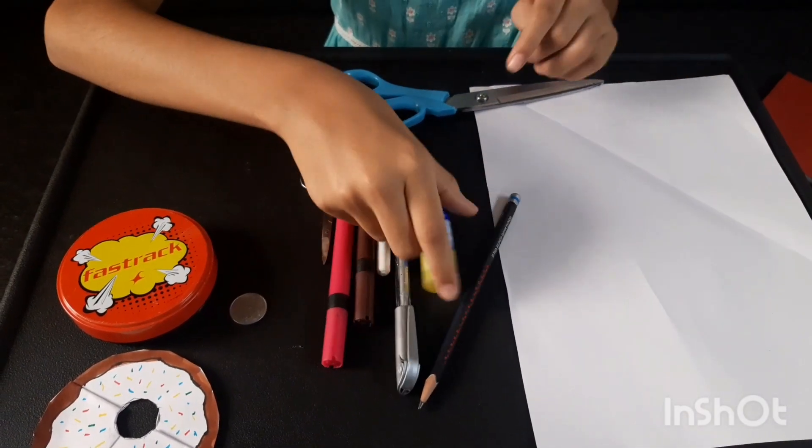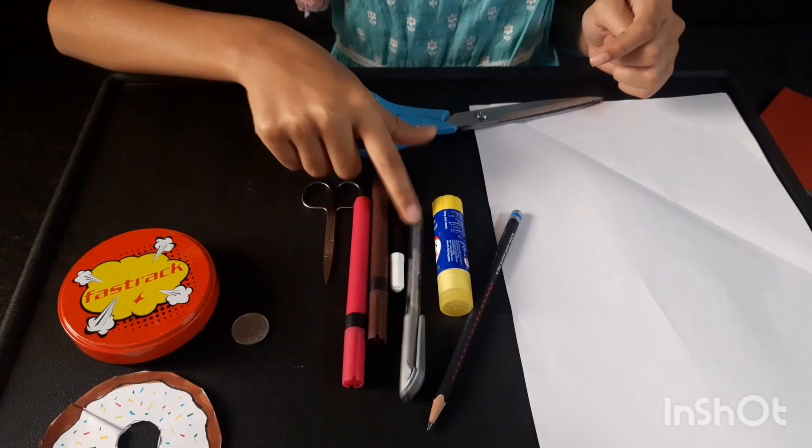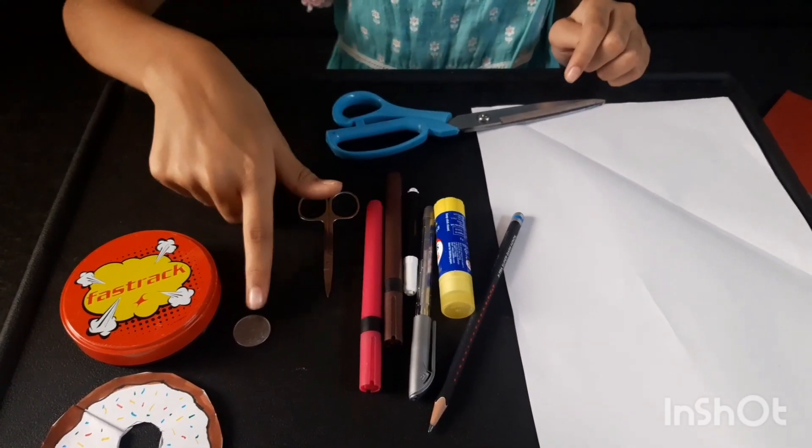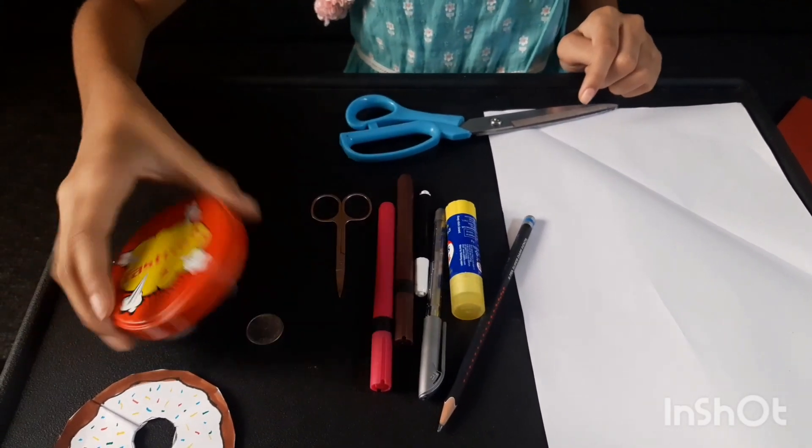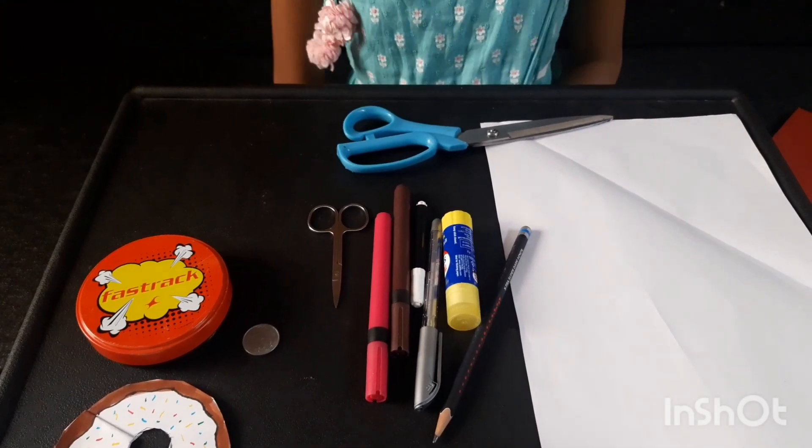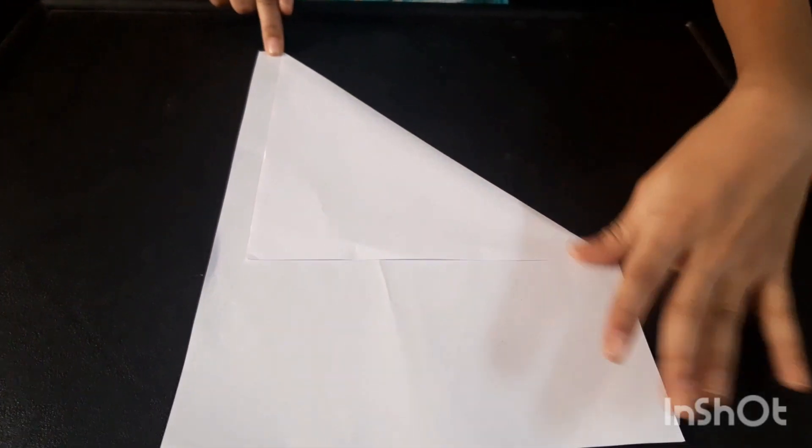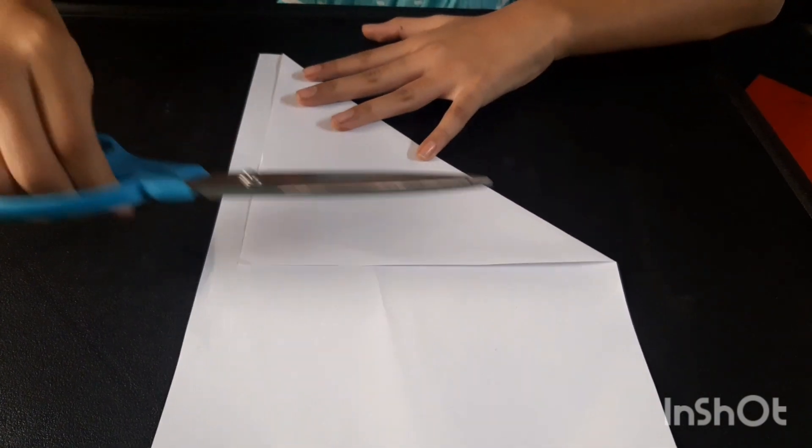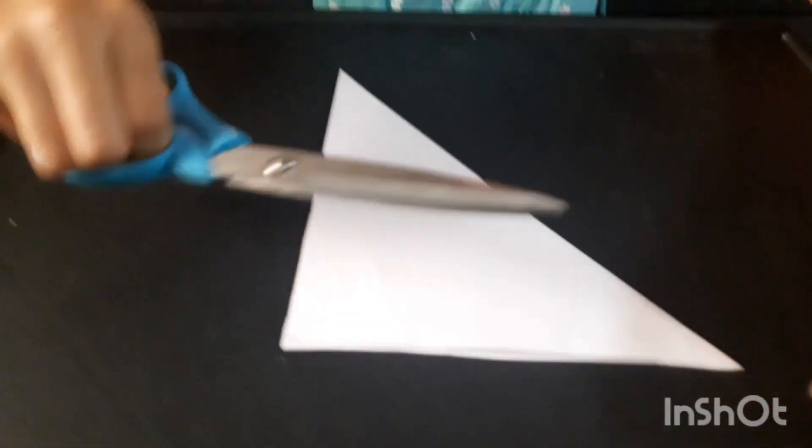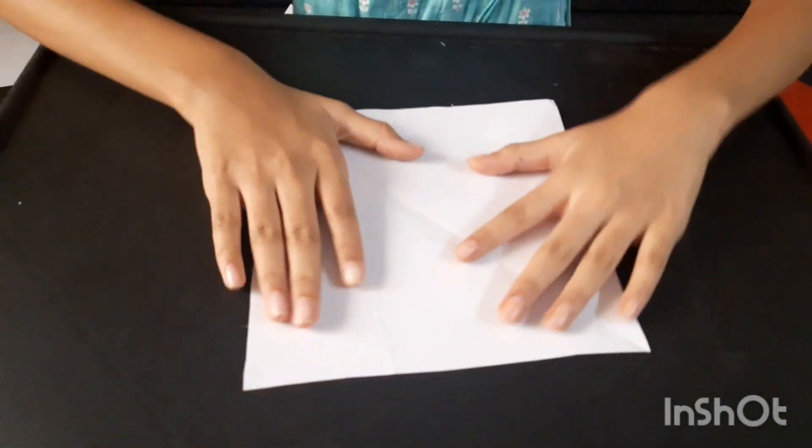The things required are an A4 sheet, glue, pencil, markers, scissors, a coin, and the cap. So now let's get started. Take an A4 sheet and fold it like this and grab the scissors.